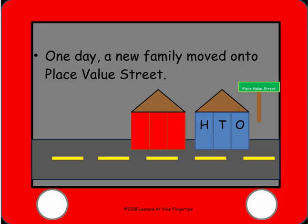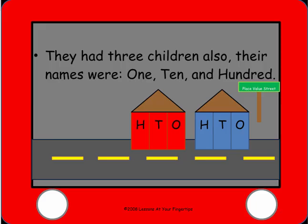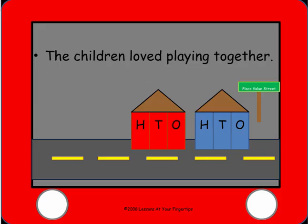One day a new family moved onto Place Value Streets. They had three children also. Their names were one, ten, and hundred. The children loved playing together.